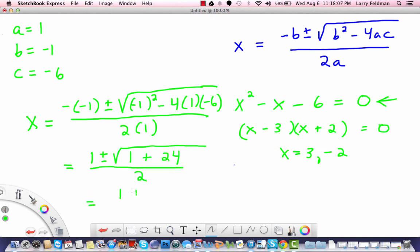Then we have 1 plus or minus the square root of 25 over 2, which is 1 plus or minus 5 over 2, which yields two answers. The first answer is 1 plus 5 over 2, which is 6 over 2 or 3. And the second answer is 1 minus 5 over 2, which is negative 4 over 2, which is negative 2.